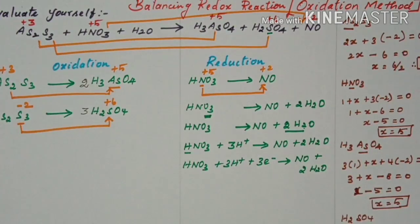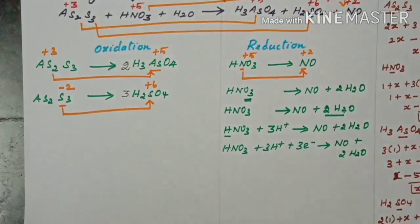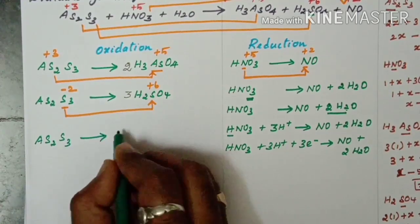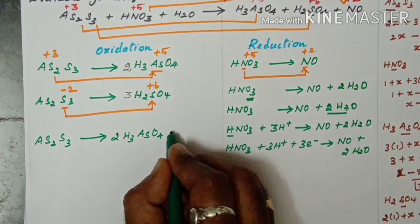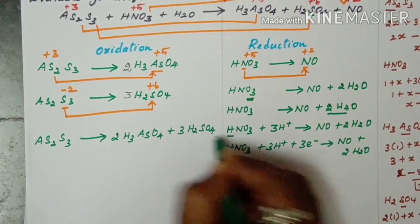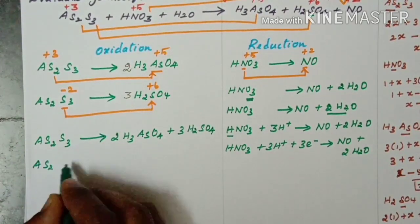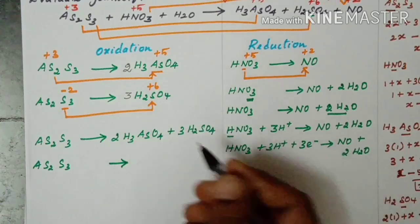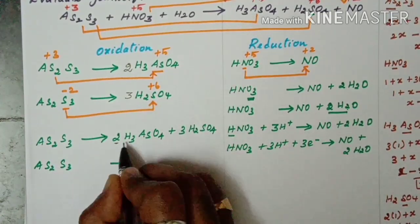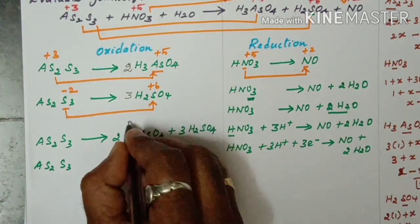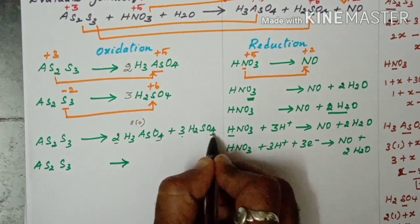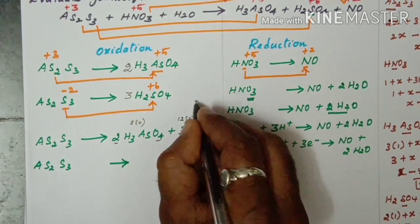For the oxidation side: AS2S3 gives 2H3AsO4 plus 3H2SO4. Counting the total oxidation electrons: arsenic changes by 2 per atom, and with 2 arsenic atoms that is 4 electrons. Sulfur changes by 8 per atom, and with 3 sulfur atoms that is 24 electrons. Total oxidation electrons: 28.